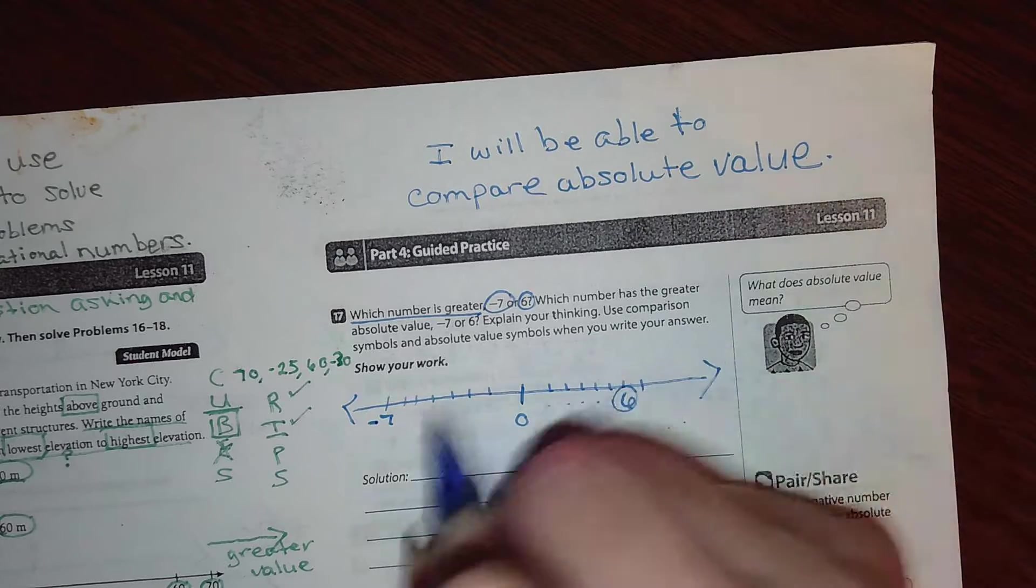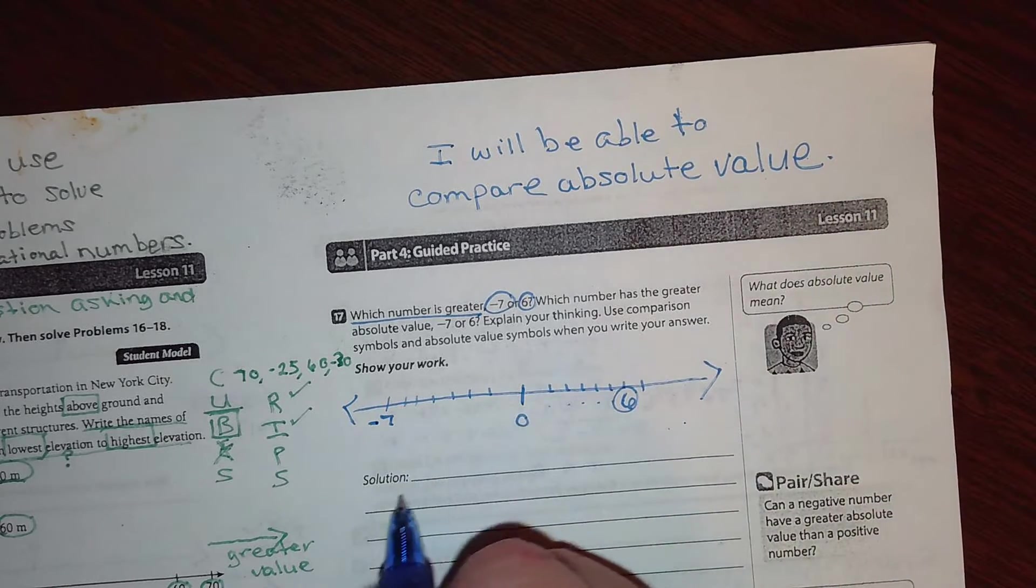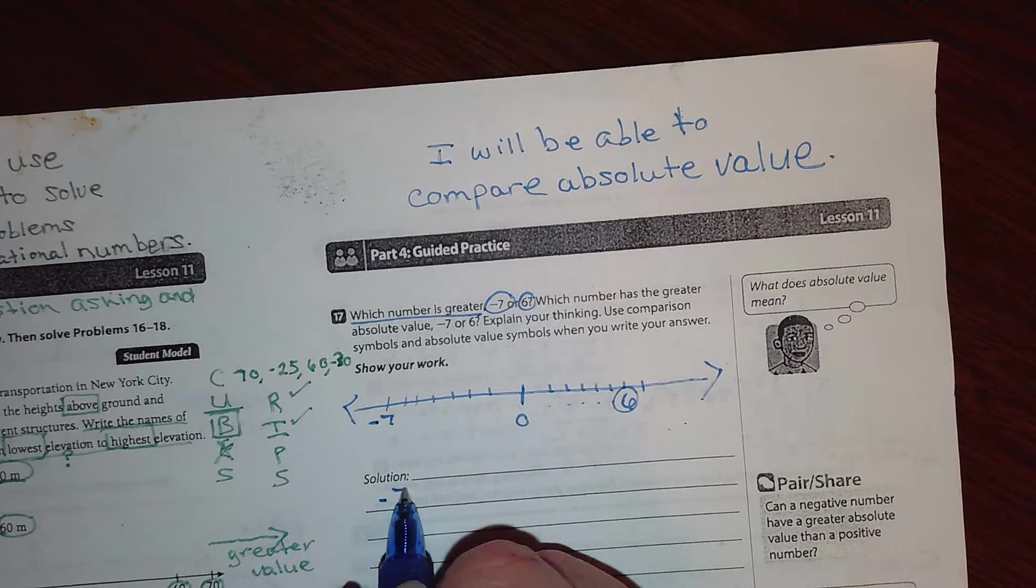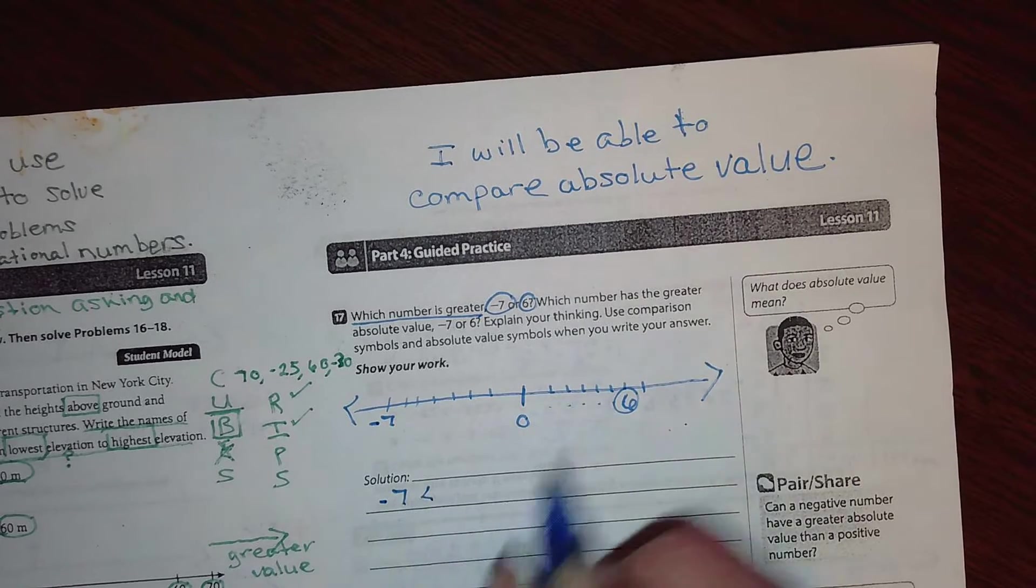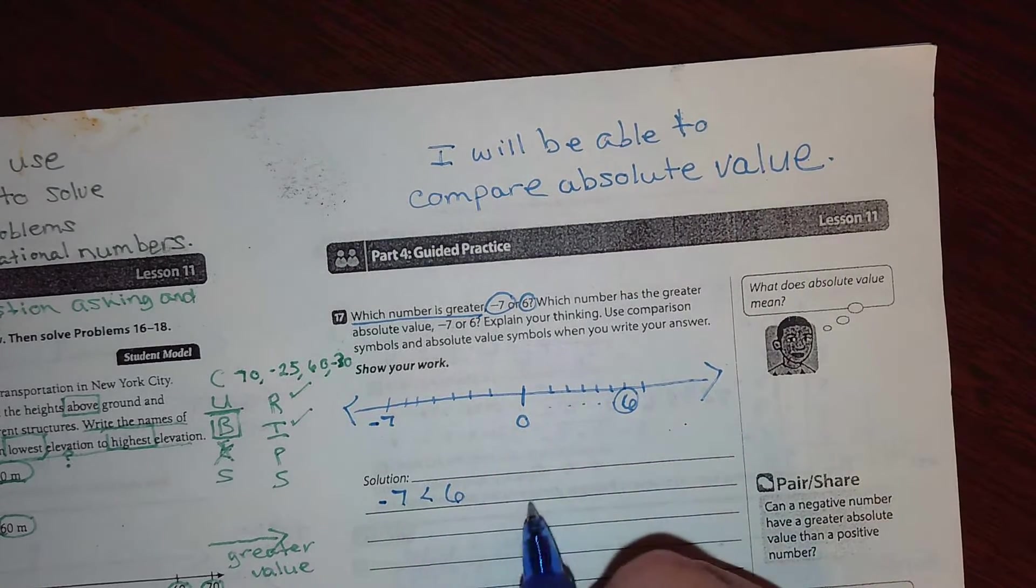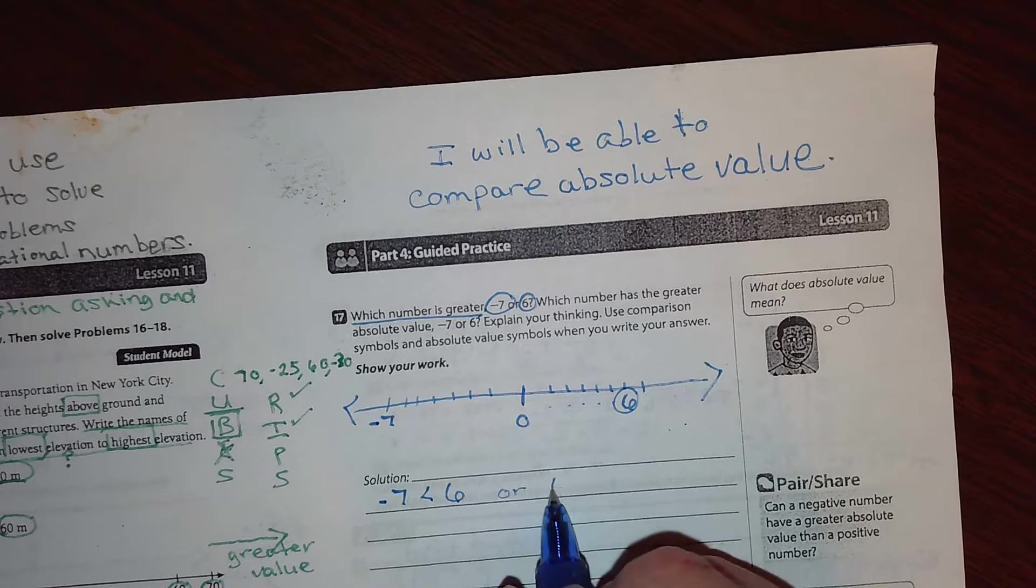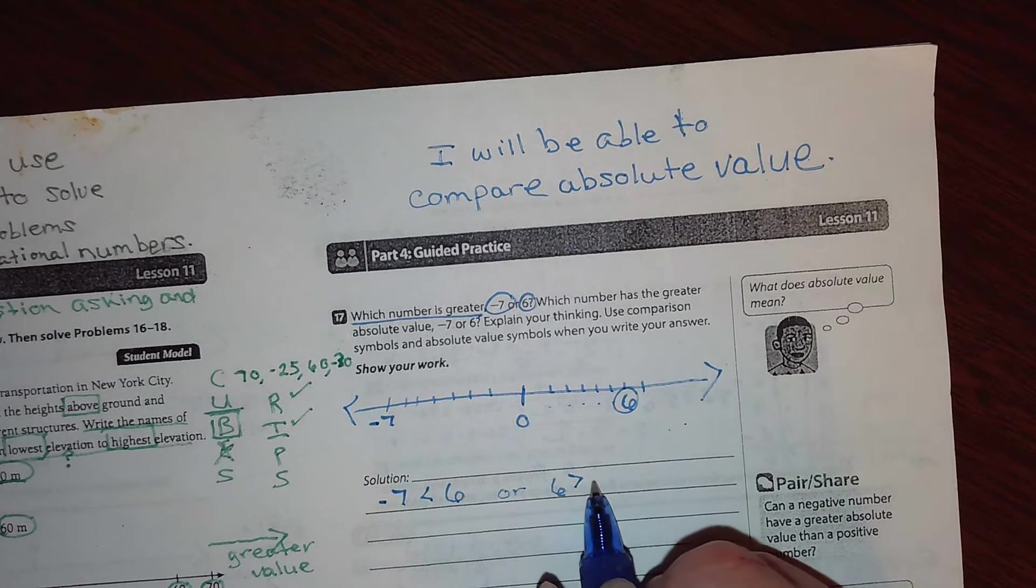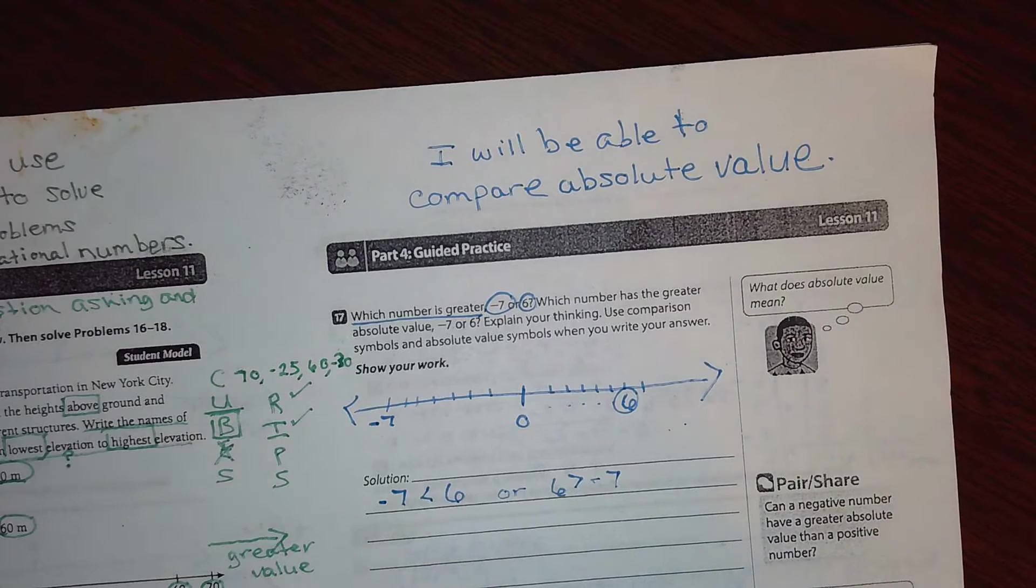So I'm going to say the solution is negative seven is less than six, right? Or six is greater than negative seven are the two ways I can write that, right?